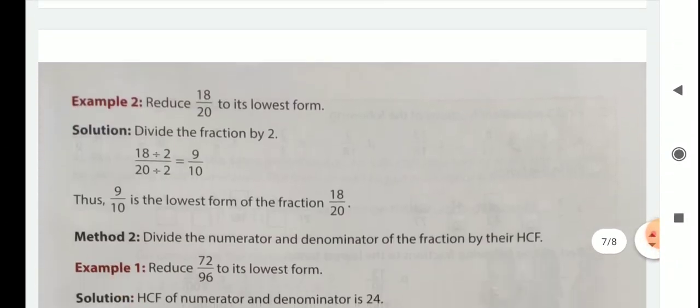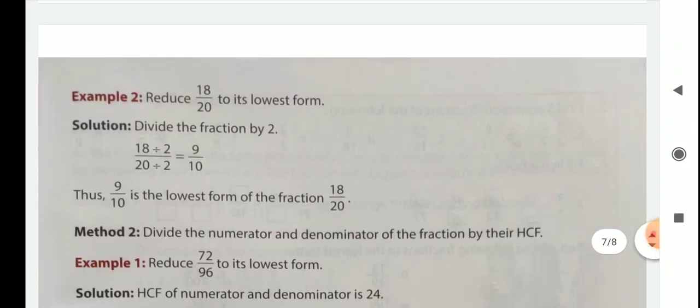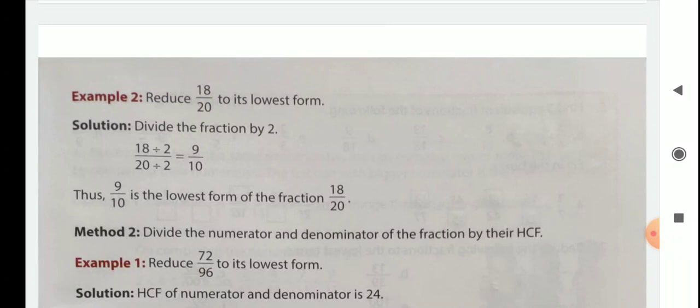Example 2: reduce 18 by 20 to its lowest form. Here you divide by 2, and we get 9 by 10, which is the lowest term.